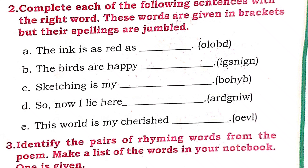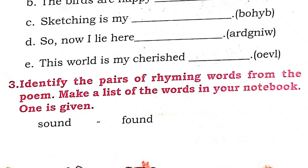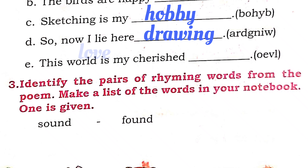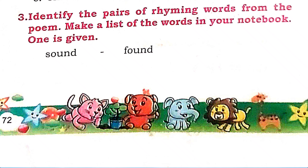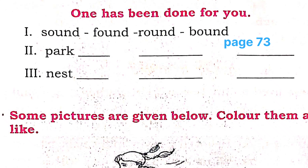Serene means Calm. Complete each of the following sentences with the right word — the words given in the bracket are jumbled. The ink is as red as blood. The birds are happy singing. Sketching is my hobby. So now I like your drawing. This world is my cherished love. Identify the pairs of rhyming words from the poem. Example given: Sound — Found, Round — Bound.